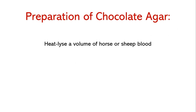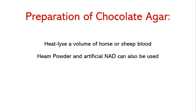The composition of chocolate agar and blood agar is the same; the only difference in preparation is that red blood cells are lysed. A volume of horse or sheep blood representing 5–10% of the total media volume is heated very slowly to 70°C in a water bath. Alternatively, heme powder and artificial NAD can be used — heme powder is added to blood agar before autoclave, and NAD is added upon cooling to 50°C. Dispense the liquid media into petri dishes and allow to solidify.